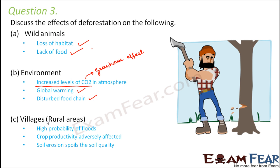Effects on villages: there is a high probability of floods, because plants hold the soil tightly and prevent it from being carried away by rainfall, and the water-retaining capacity of soil is greater when there are more plants. When plants are cut down, the water holding capacity of the soil reduces, so during rainfall water remains on the surface, leading to floods. Crop productivity is also adversely affected because soil erosion takes place — soil gets carried away by water, reducing soil fertility.